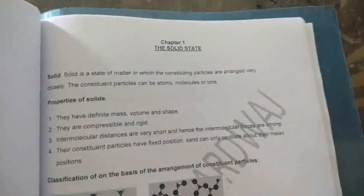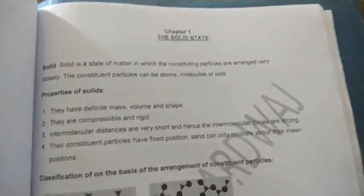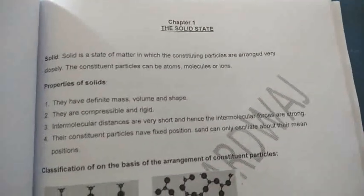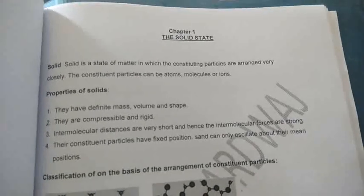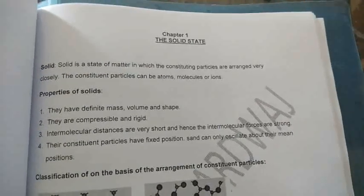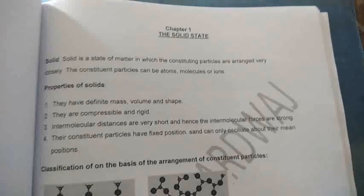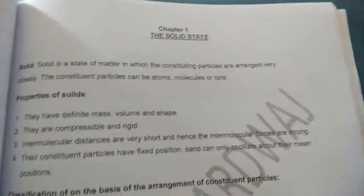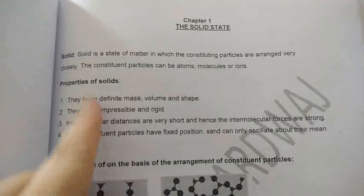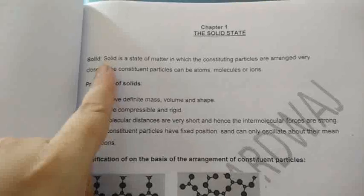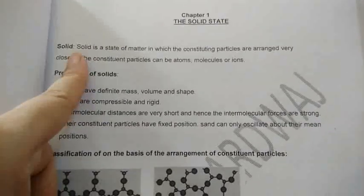Today we will start with Chapter 1, the solid state. This is the first chapter from the first part of our book. We already know matter can exist in three states: solid, liquid, and gas. This entire chapter is about the solid state of matter.